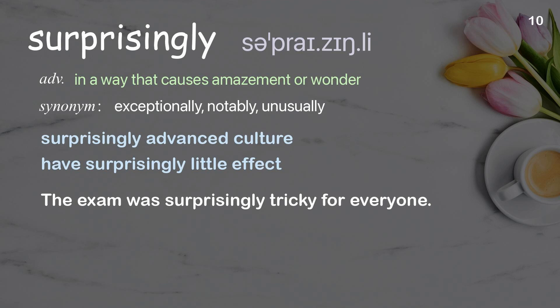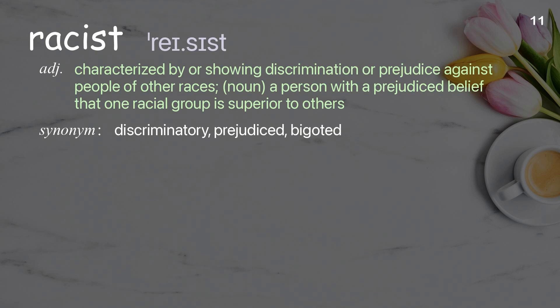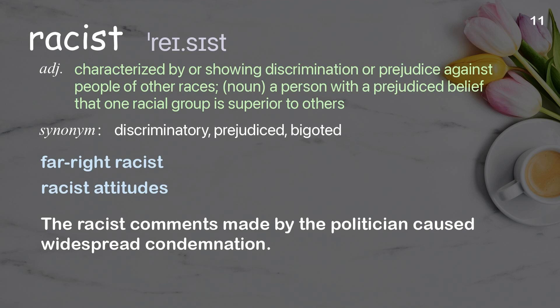Racist: characterized by or showing discrimination or prejudice against people of other races; a person with a prejudiced belief that one racial group is superior to others. Examples: far-right racist, racist attitudes. The racist comments made by the politician caused widespread condemnation.